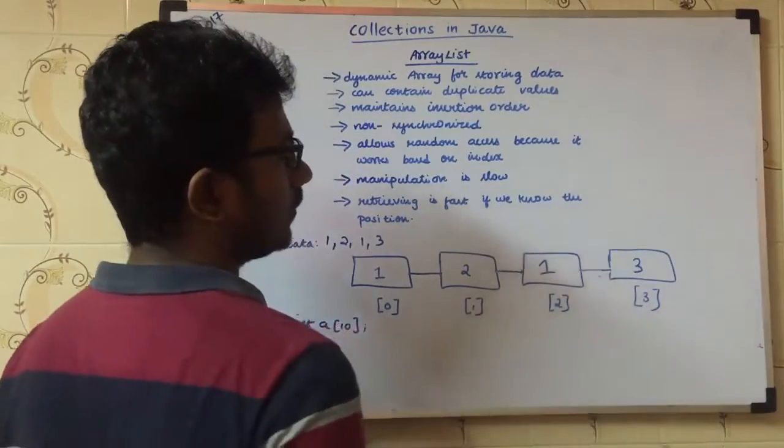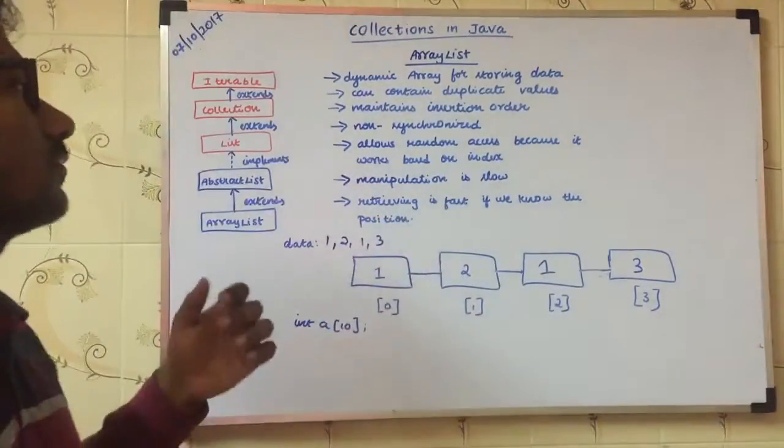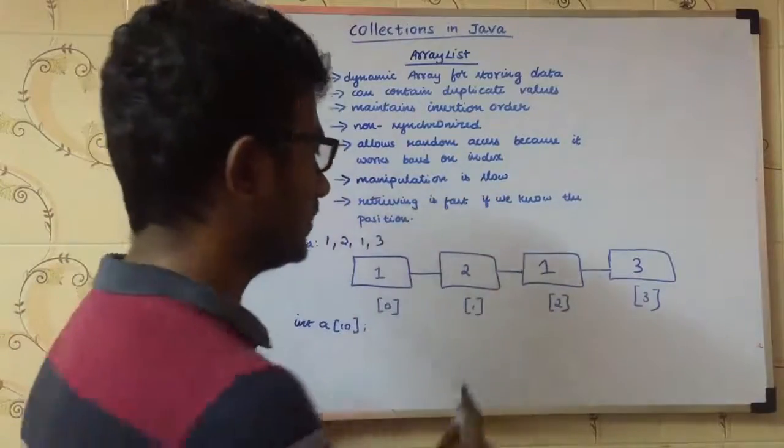Using index, that is the random access meaning. Manipulation is slow. When you want to insert the data, the data will shift.